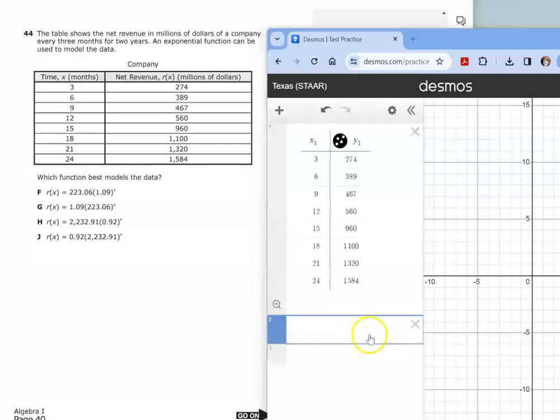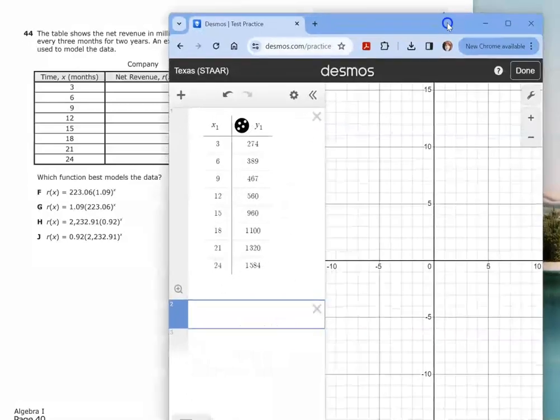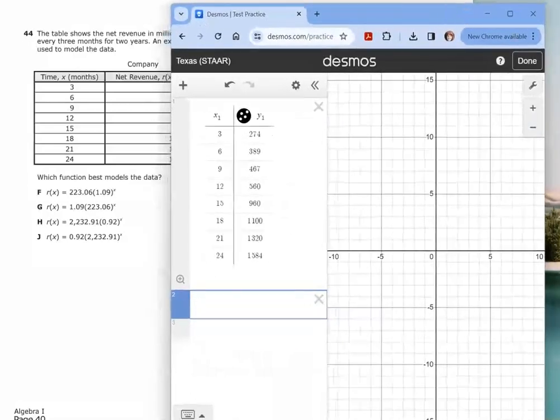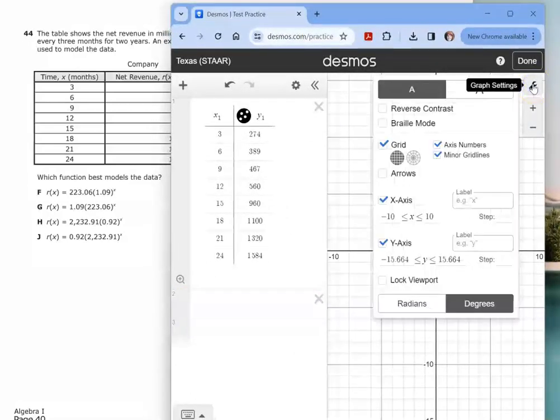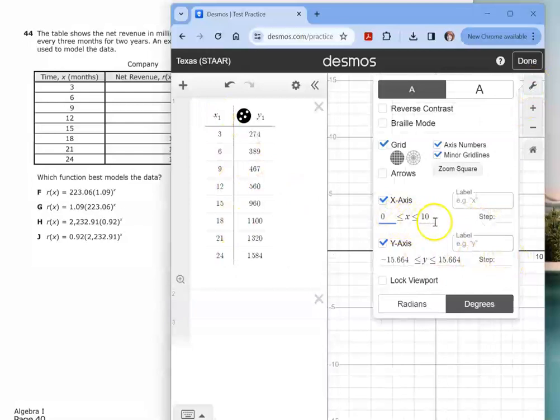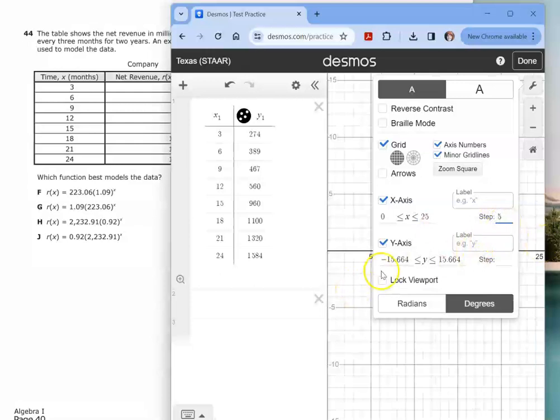Once these are typed in, we are going to use our settings over here to adjust our graph to fit this data. Notice the X values go from 3 to 24. So I need something smaller than 3 and larger than 24. And I can use a step of whatever. I think I'll use 5. The Y values in this case start at 274 and go up to over 1500. So I'm going to start at 200.